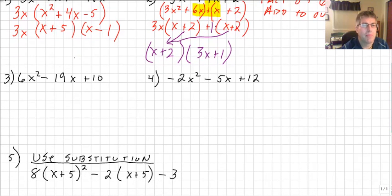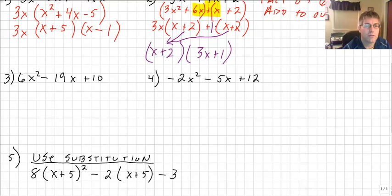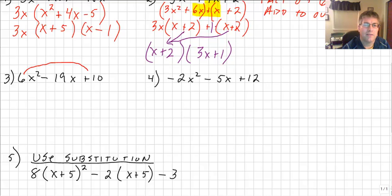Let's go to sample number 3. This one would be more challenging with guess and check because we have factors of 6 — lots of choices: 6 times 1, 3 times 2, 2 times 3, and for 10: 5 times 2, 10 times 1 — all sorts of choices. So let's look at this as factoring by grouping. We take 6 times 10 and multiply them together to get 60.